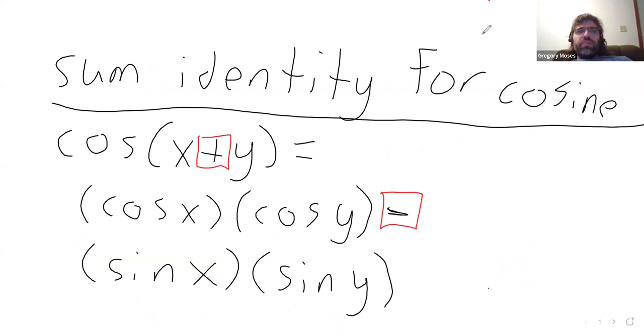So here's a sum identity. There's also a difference identity. In other words, a subtraction identity. So the subtraction identity looks a lot like the addition identity.